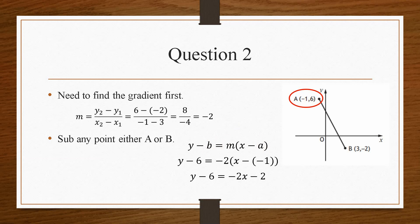Now if we tidy this up and multiply out the bracket, we end up with y minus 6 equals minus 2x minus 2. And then if we move the 6 across, your equation then becomes y equals minus 2x plus 4. And that's how you would go about solving that kind of problem there.